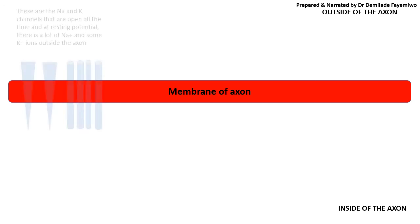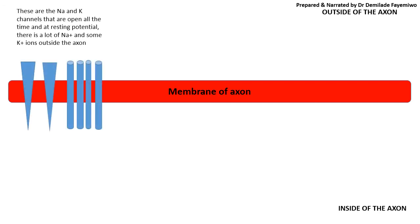Now let's continue. We've discussed resting potential — so what happens when we generate an action potential? We still have the sodium and potassium channels that are open all the time, and there are a lot of sodium and potassium ions on the outside, because the sodium-potassium pump has been pumping sodium out and potassium in, while lots of potassium also moved out through the open channels — keeping the inside at about minus 60 to minus 70 millivolts.